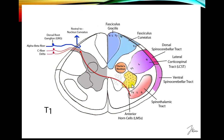Anterior horn cells are located in the ventral horn of the spinal cord — the lower motor neurons, sometimes called alpha motor neurons. Nerve roots come from each of these anterior horn cells. Another nucleus here is Clark's nucleus, which is associated with the dorsal spinocerebellar tract and serves as a relay nucleus for it. Clark's nucleus is seen mainly in thoracic cord sections.